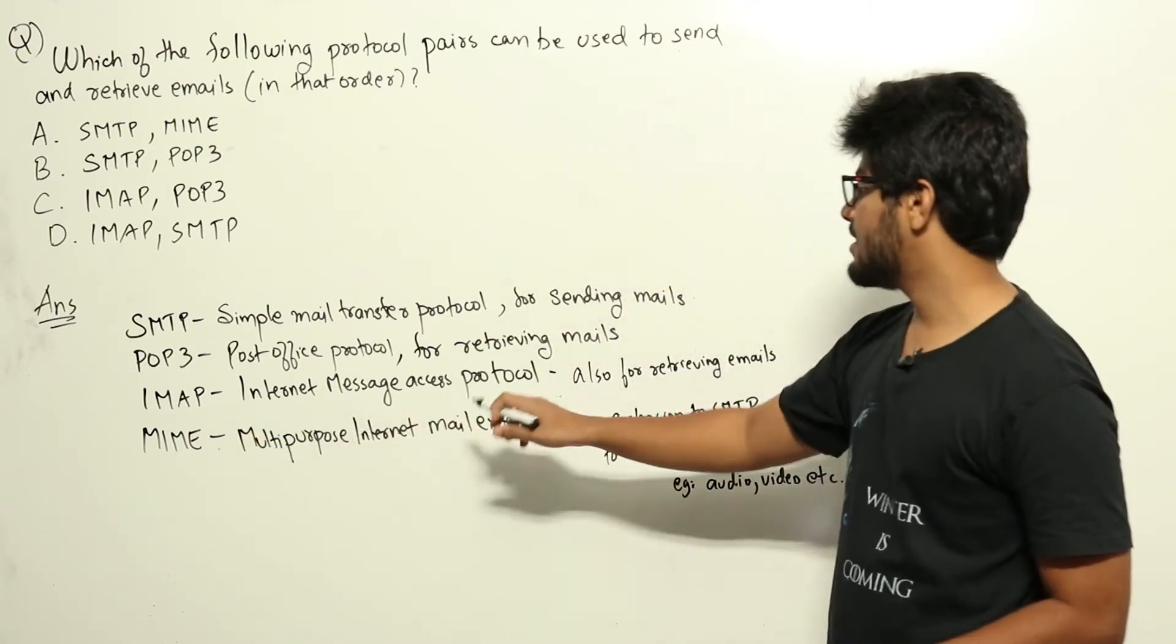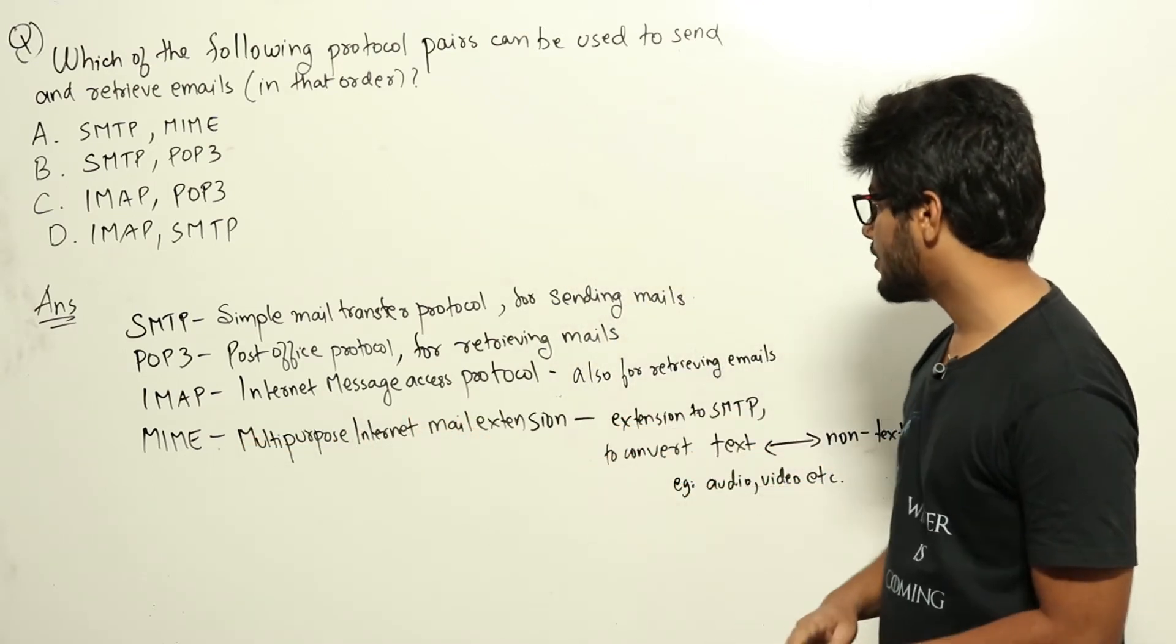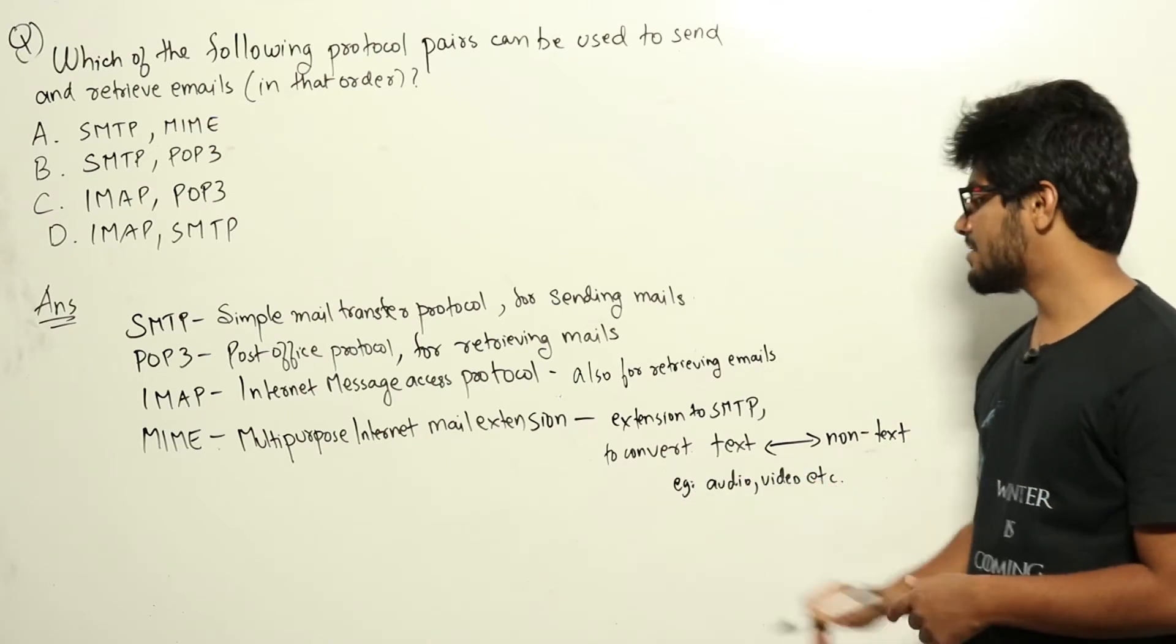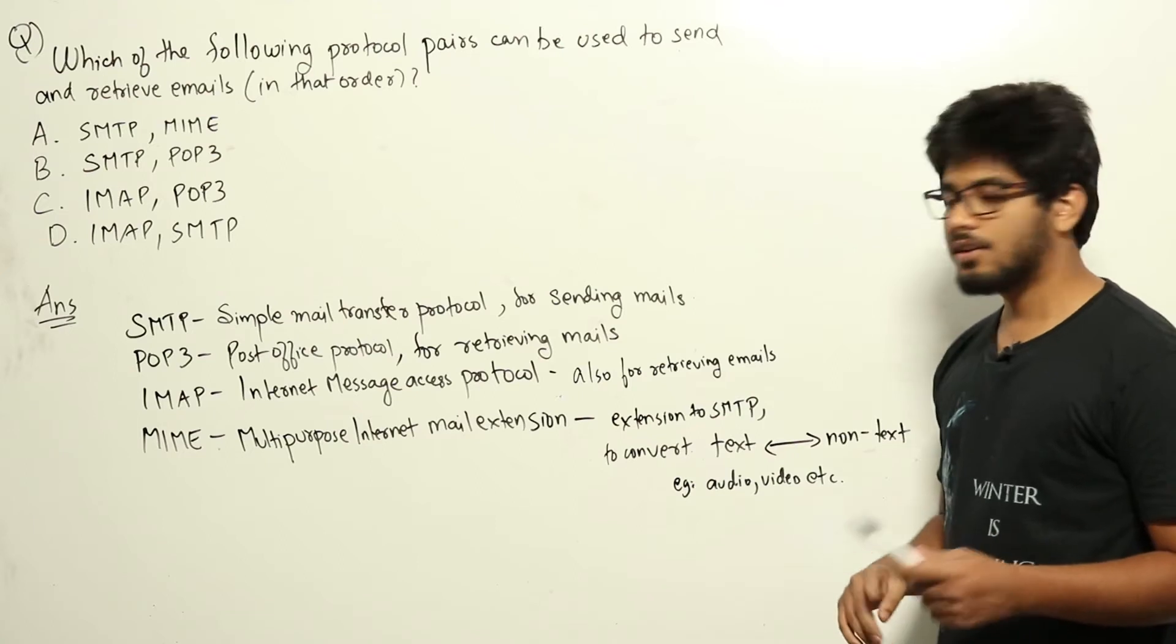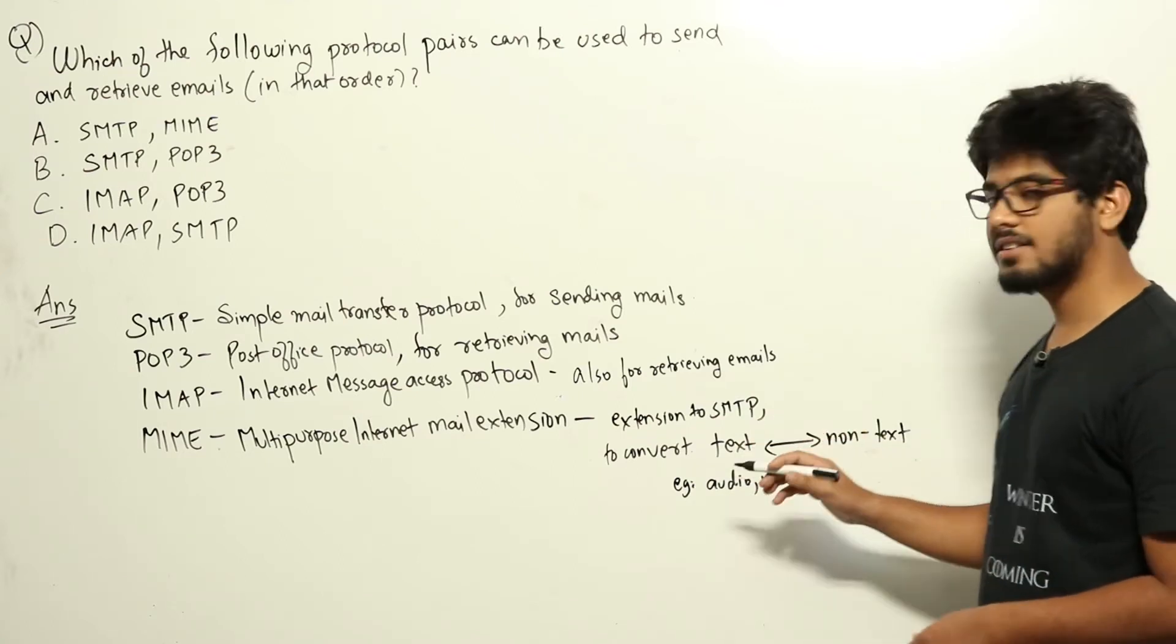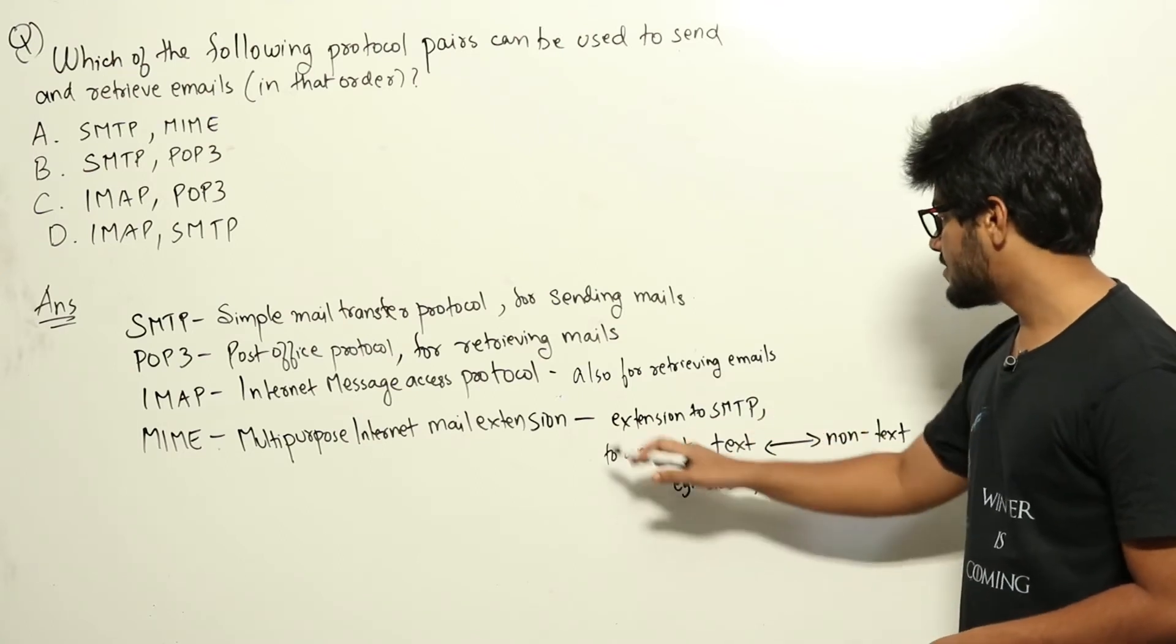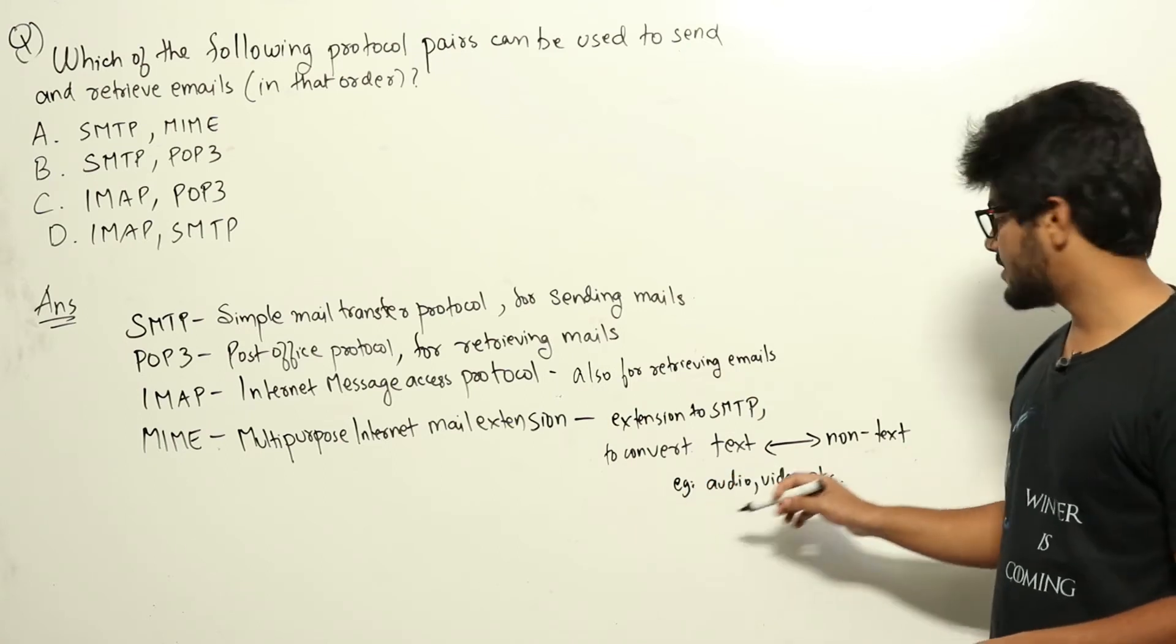MIME is Multipurpose Internet Mail Extension protocol. This is just an extension to SMTP that is used to convert non-text characters to text characters and vice versa. This is mainly used for sending media files such as audio and video.